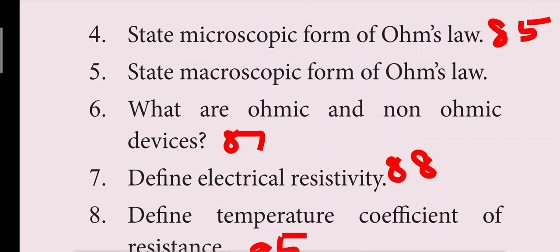The microscopic and macroscopic forms of Ohm's law: at constant current and constant temperature, the steady current flowing through a conductor is directly proportional to the potential difference between the ends of the conductor.